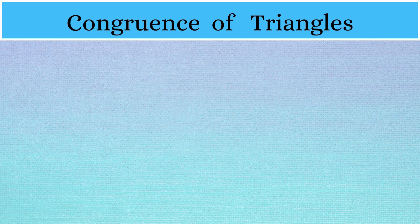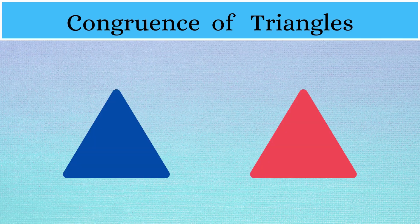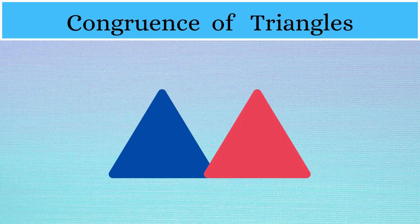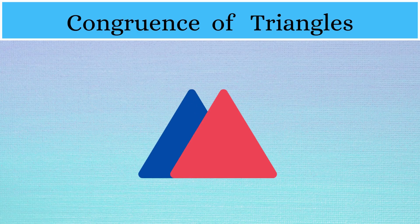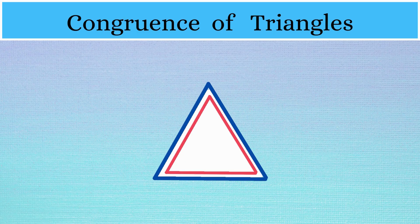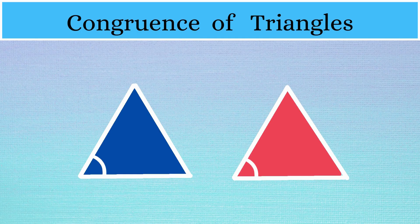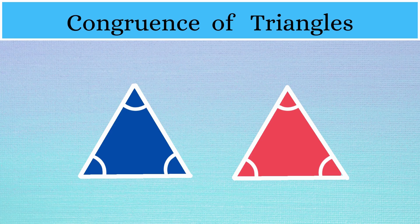Congruence of triangles. Two triangles are said to be congruent when you can place one triangle above the other and it fits in perfectly. This means that the corresponding sides and the corresponding angles of both the triangles are equal, which means a total of six conditions has to be satisfied for two triangles to be congruent.